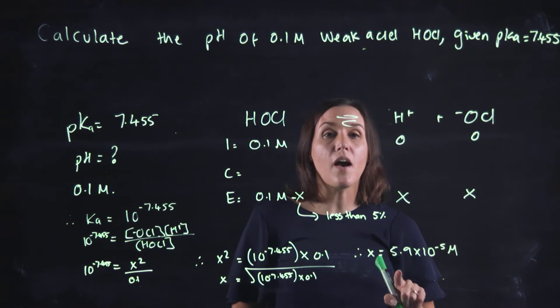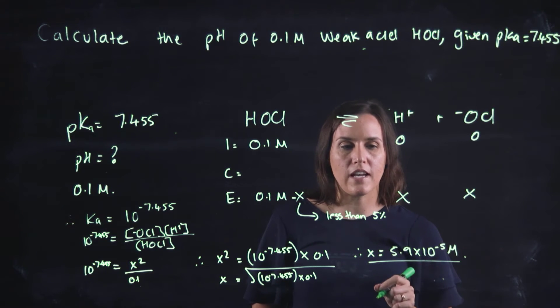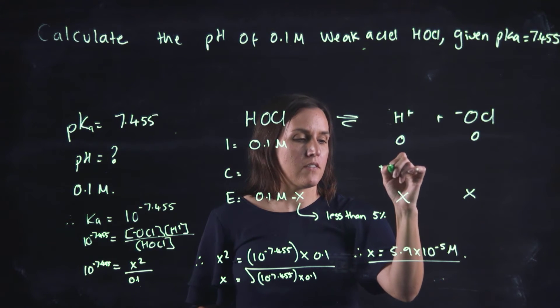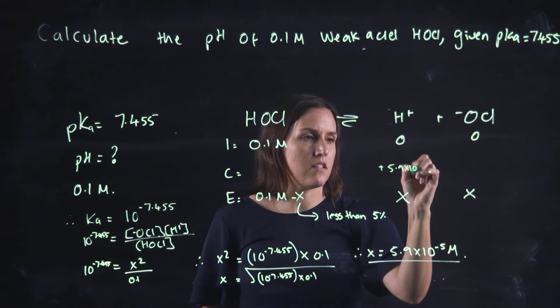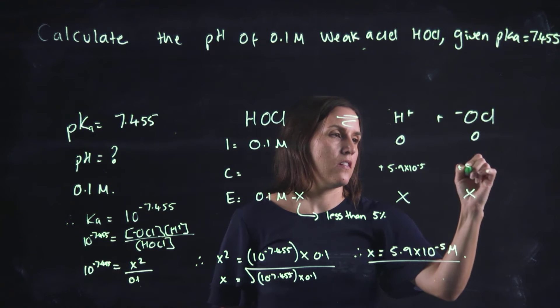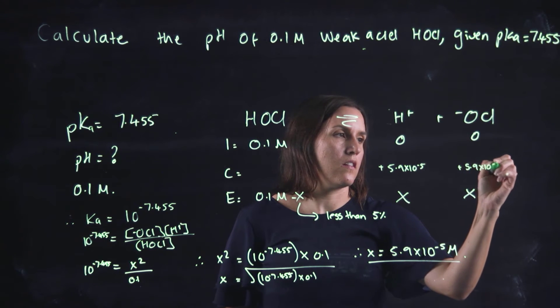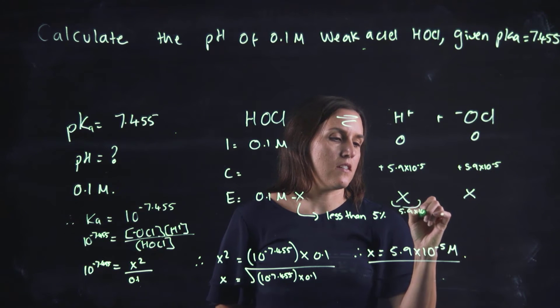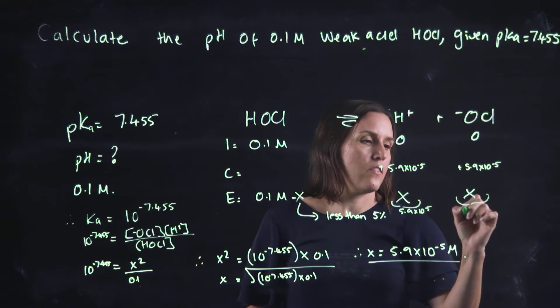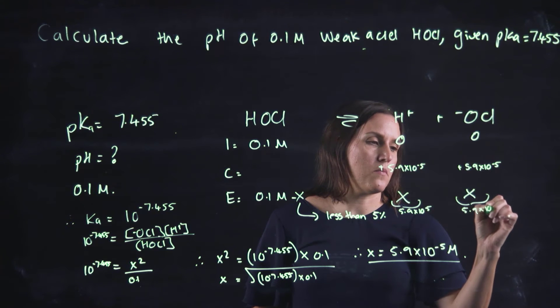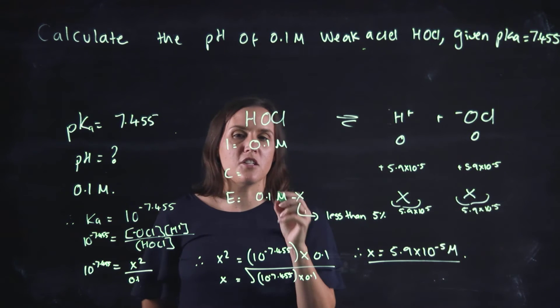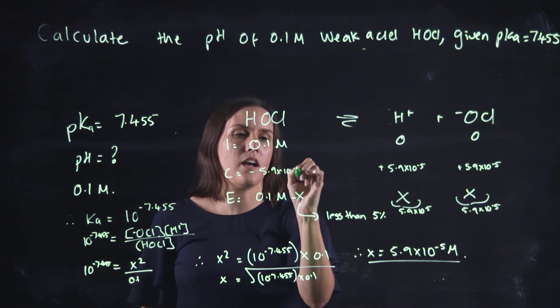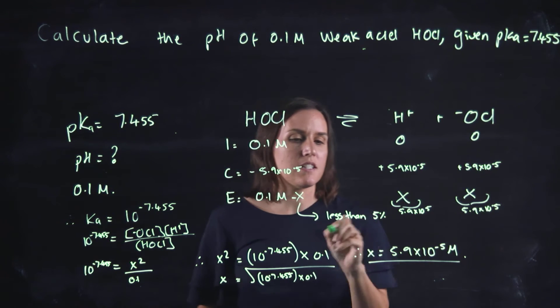So you get 5.9 by 10 to the minus 5 molar for your x value. So this is plus 5.9 by 10 to the minus 5, and these values here would be 5.9 by 10 to the minus 5, 5.9 by 10 to the minus 5. Now the change would be minus 5.9 by 10 to the minus 5.